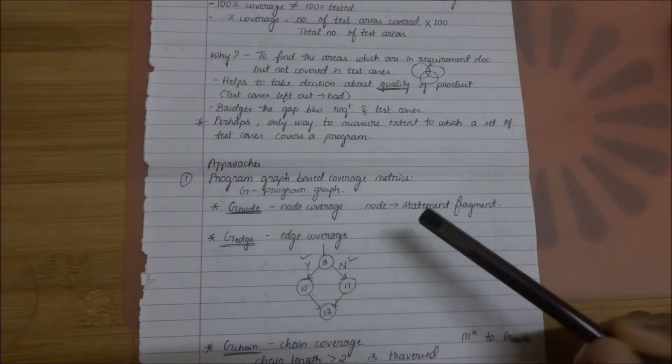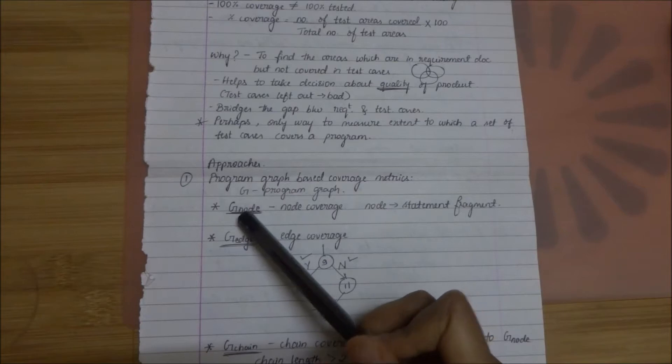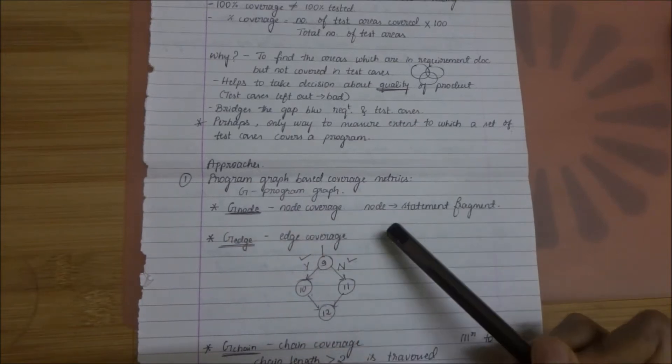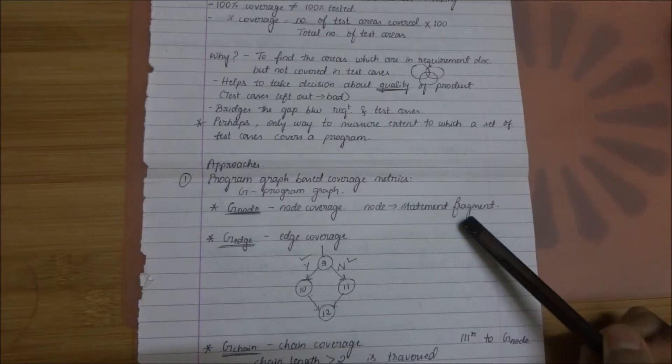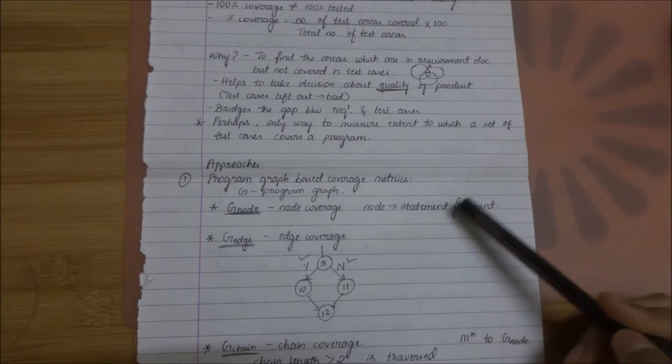Under program graph based matrix there are a few notations. The first one is G-node. It represents node coverage. As I told already, node represents a statement fragment. So G-node is concerned with covering those statement fragments.